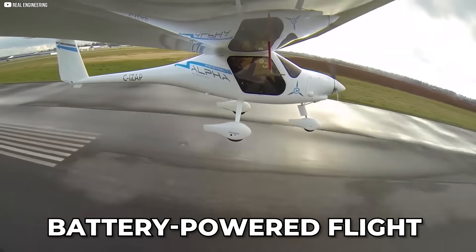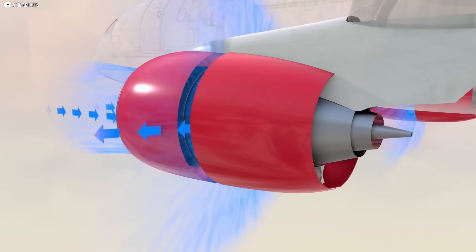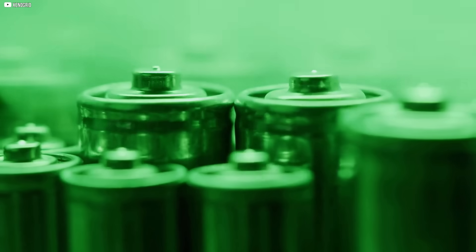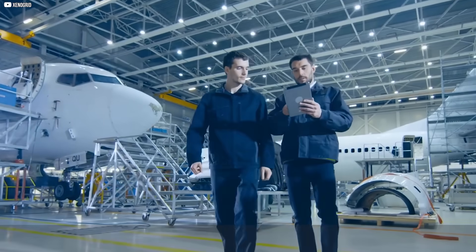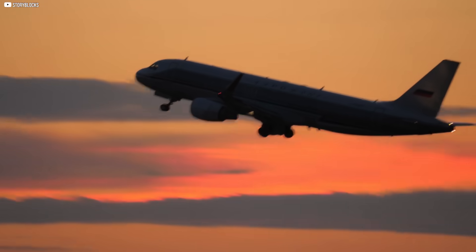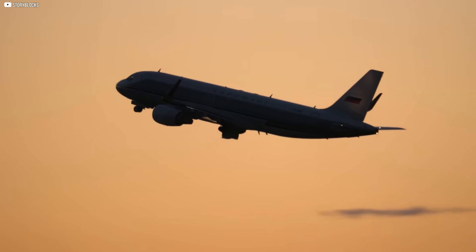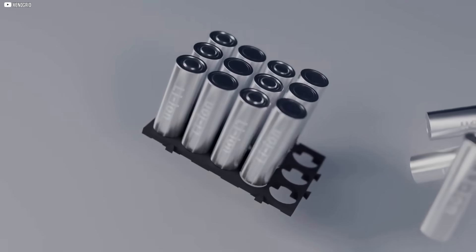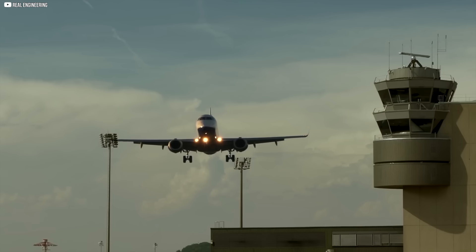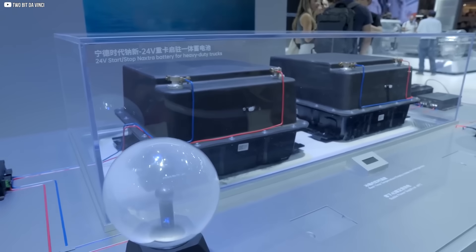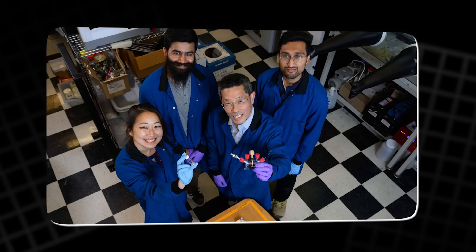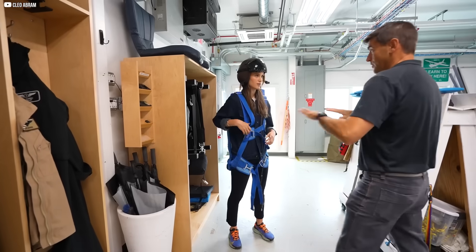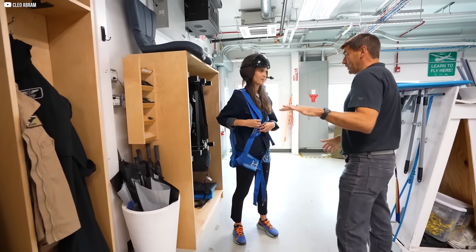Battery-powered flight has shown promise, but it hits a hard wall when it comes to energy density. Lithium-ion batteries can't store enough power to keep larger planes in the air for long. For short hops, they work. But anything beyond that, the weight becomes a nightmare. The more batteries you add, the heavier the aircraft becomes, and the more energy you need just to lift it. So, if batteries aren't enough and jet fuel is damaging, what's left? That's the exact question researchers at MIT have been asking. And their answer? A radical rethink of what fuel can be.